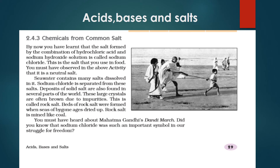If we take hydrochloric acid as the acid and sodium hydroxide as the base, the products formed are salt and water — and the salt formed is sodium chloride. This is the salt you use in food, and we can say this is a neutral salt. This is because hydrochloric acid is a strong acid and sodium hydroxide is a strong base, so the salt produced is always neutral.